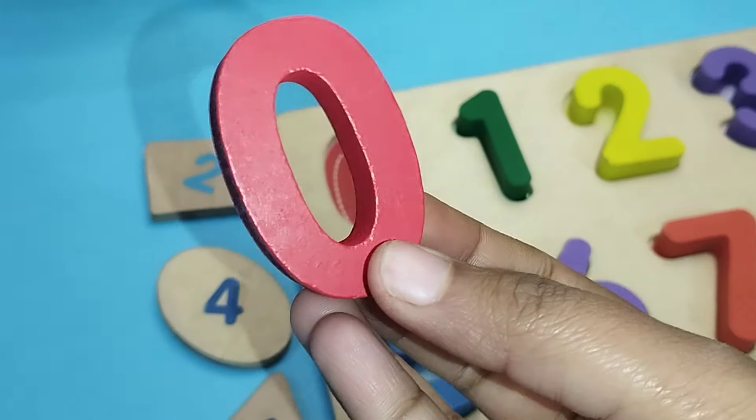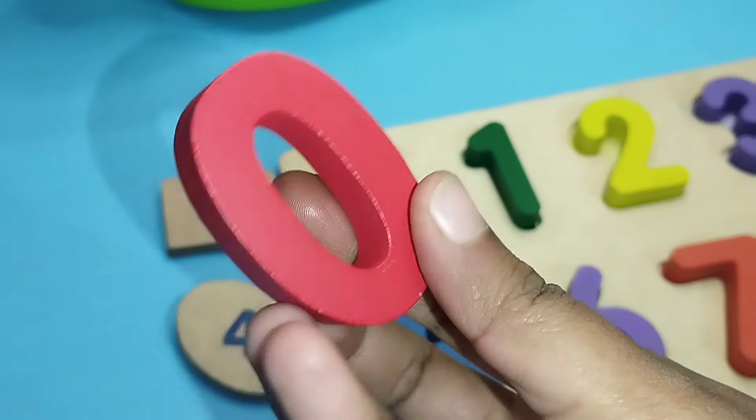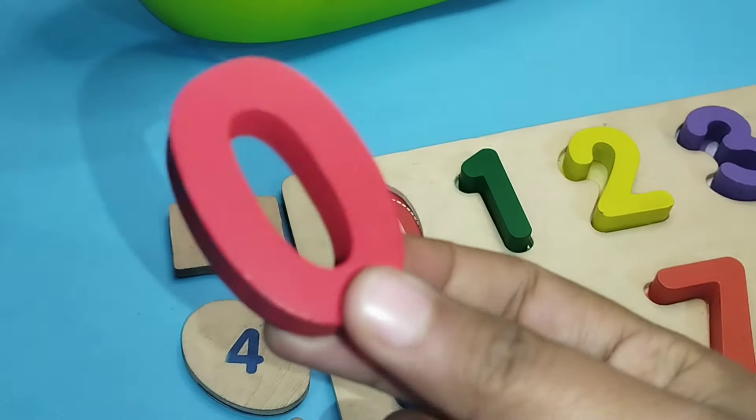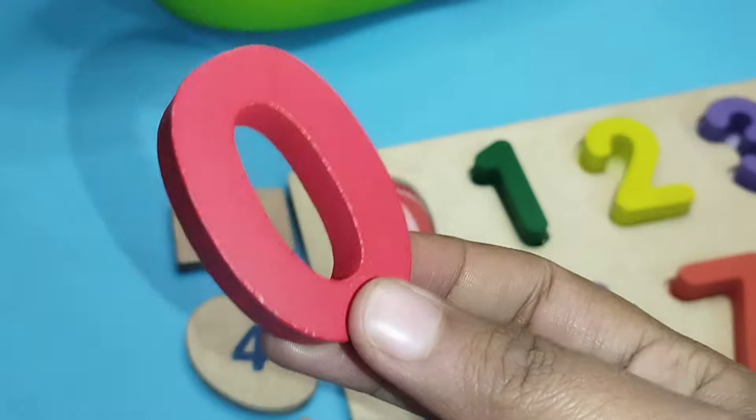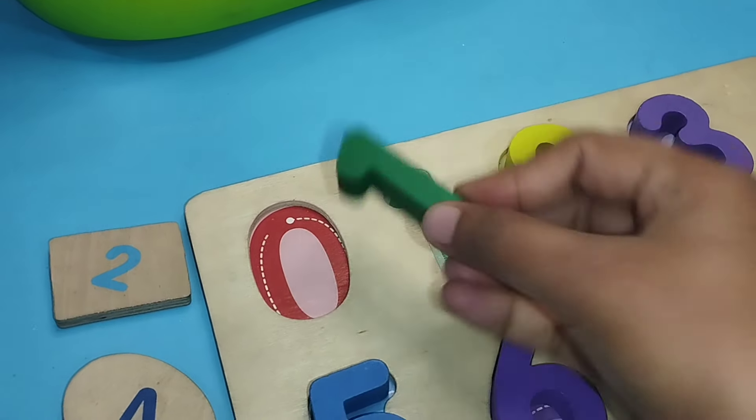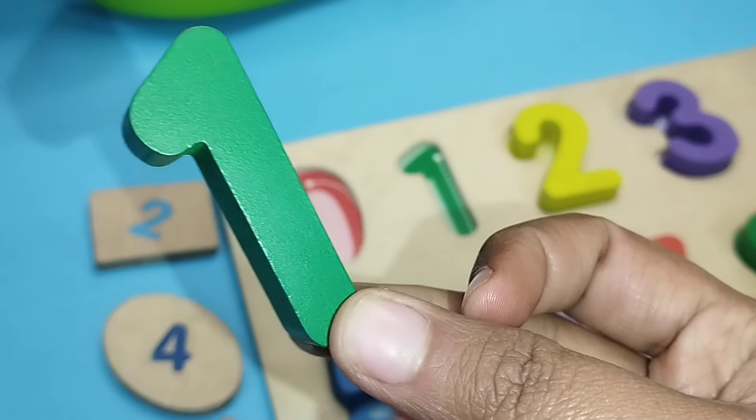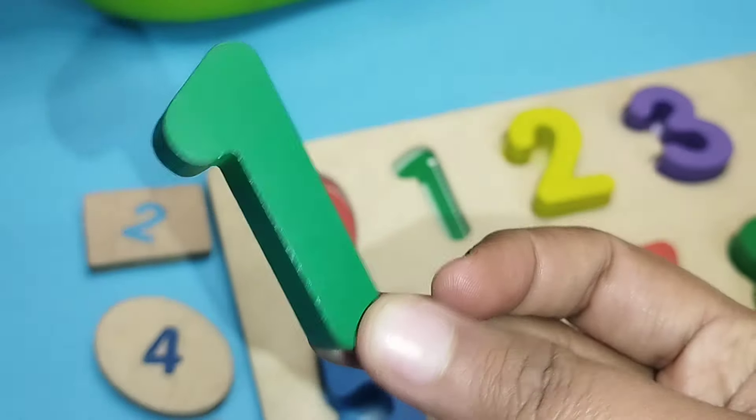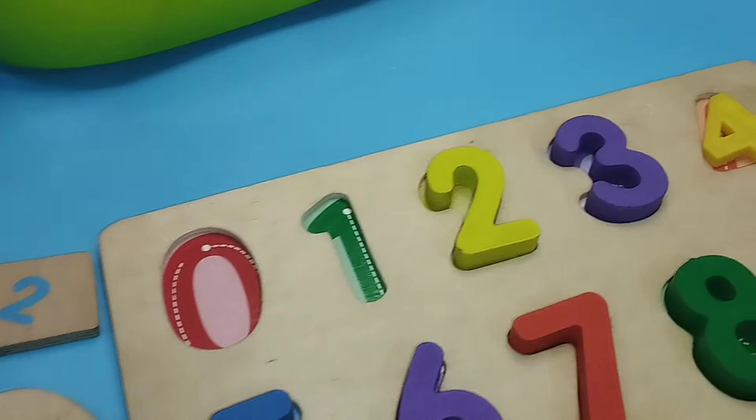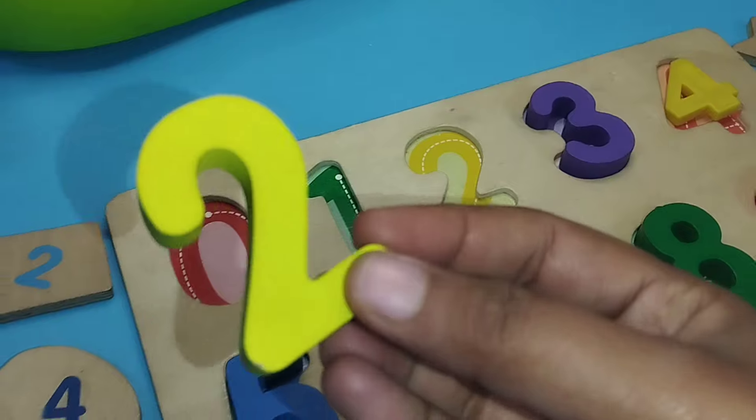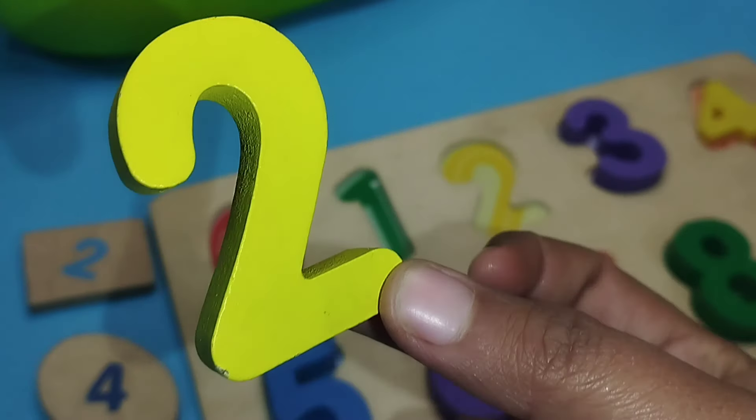The first number is number zero. This is number zero. The next number is number one. This is number one. Two, number two.